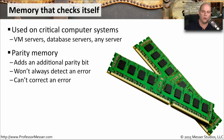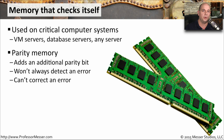One of these types is called parity memory, where it adds an additional parity bit to the information associated with a byte going through your computer. Parity memory is great, but it won't find every possible scenario. For example, if your memory becomes corrupted in a way that the parity is still correct, it's not going to notice anything wrong. And parity memory is not designed to actually correct anything — it can only inform you that a problem has occurred.